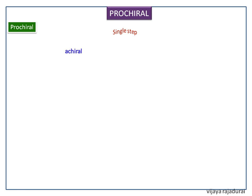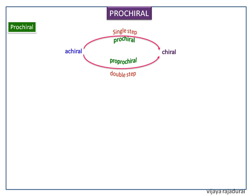A prochiral molecule is defined as a molecule that can be converted from achiral to chiral in a single step. An achiral species which can be converted to chiral in a two-step process is called pro-prochiral.